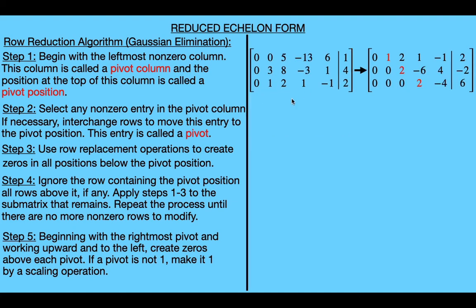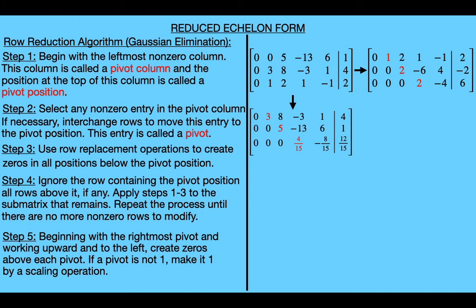Notice that the echelon matrix produced by the first four steps depends on our choice of pivots. Because we chose pivots one, two, and two, we got a particular echelon matrix. But we could have chosen different pivots — for example three, five, and four-fifteenths — and the first four steps would have given a different echelon matrix. So the echelon matrix from the first four steps is not unique. However, the reduced echelon matrix obtained after completing the fifth step is unique, regardless of which pivots were chosen in the earlier steps.